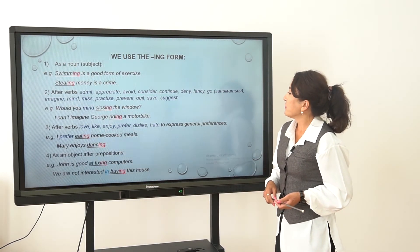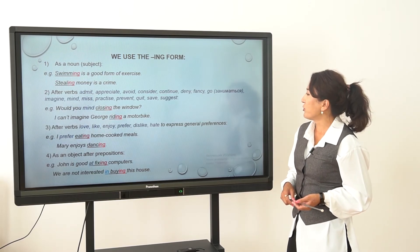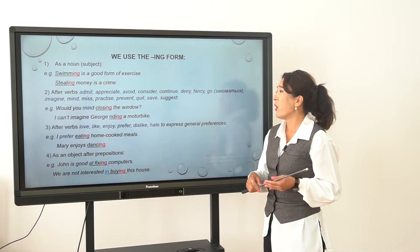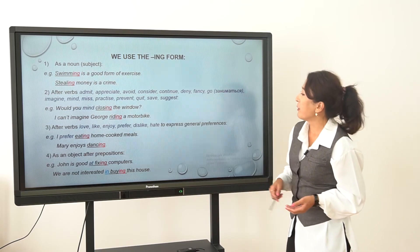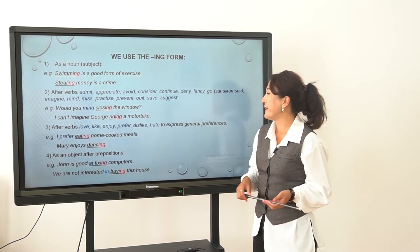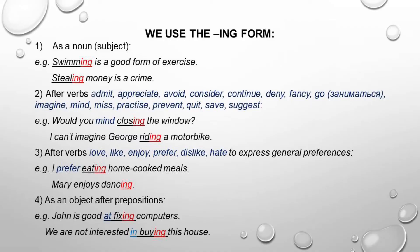And the fourth point: we use the ING form as an object after prepositions. For example, 'John is good at fixing computers.' 'We are not interested in buying this house.' After prepositions, we always use ING forms.